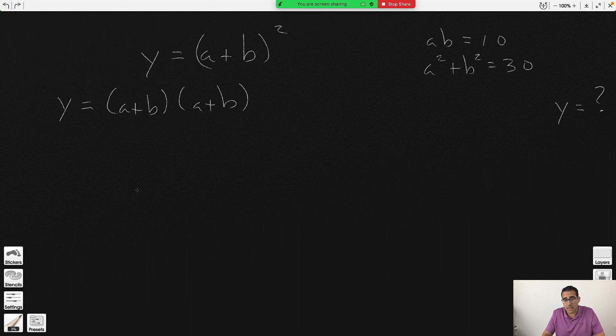Okay, we're going to apply distributive property. a times a is a exponent 2. a times b is going to be ab. b times a can be written as ba or ab, so it looks the same way. I'm going to write it as ab. And b times b is b exponent 2.